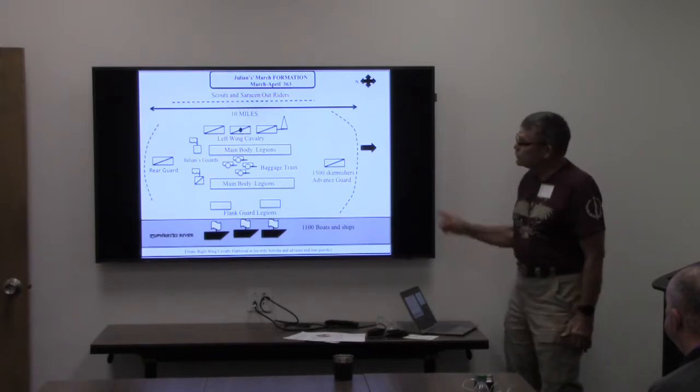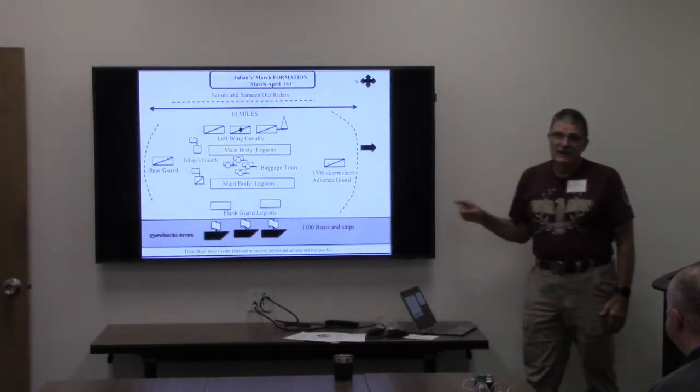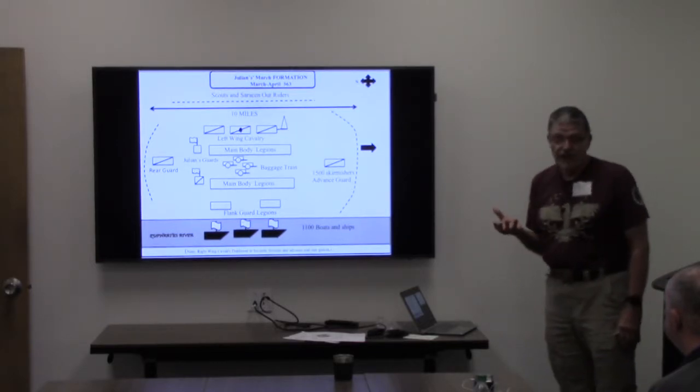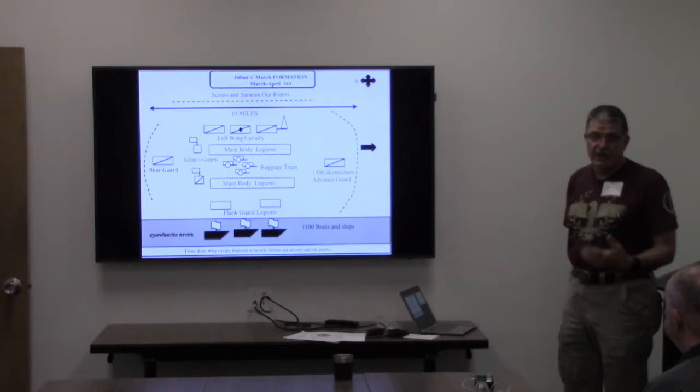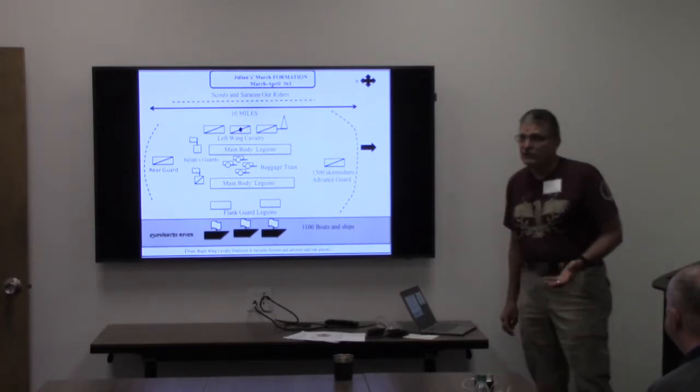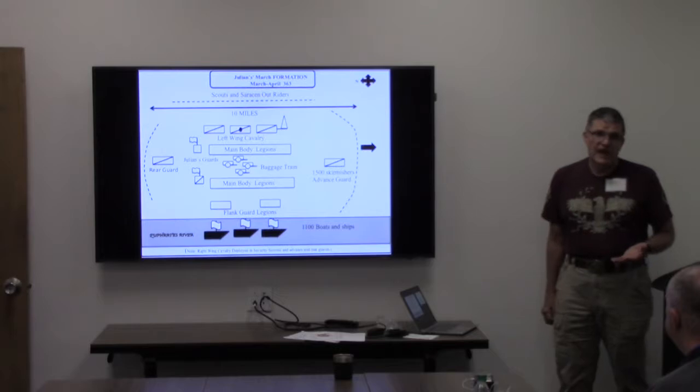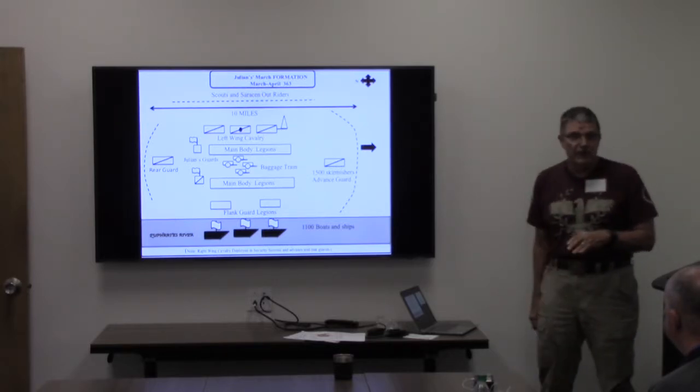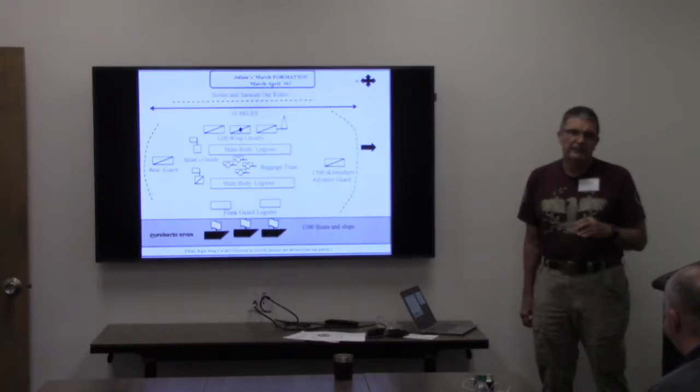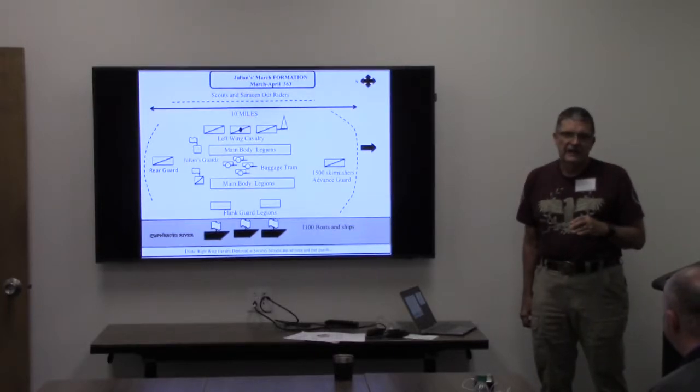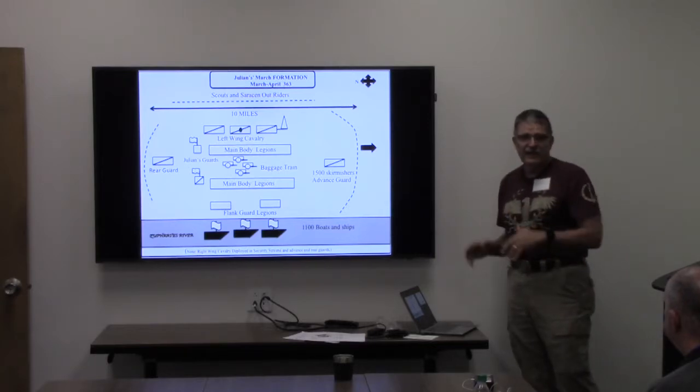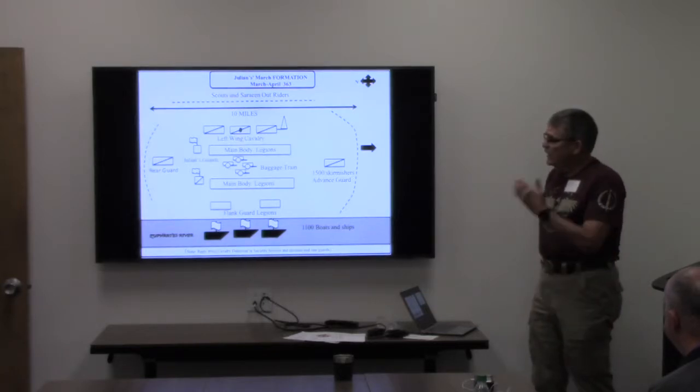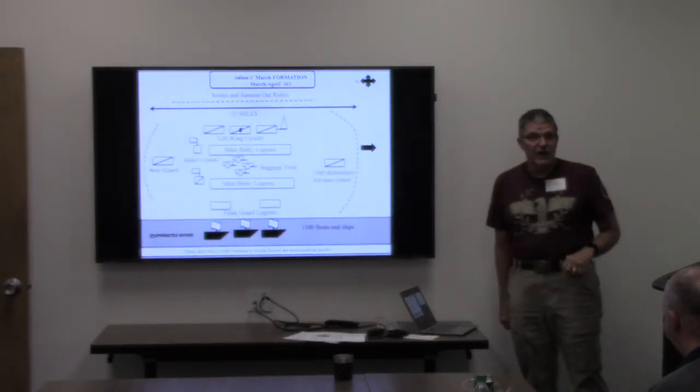Now, did you notice this security screen? The Surena, which is the second most powerful person in Persia, is in command of this delaying action. He's got about 5,000 Persian border troops and Arabs, and he's fighting a series of skirmishes as Julian comes down the river, and he's winning them. The security screen is getting its nose punched in every day, but it's not affecting the army's advance at this point.